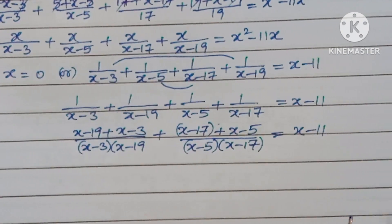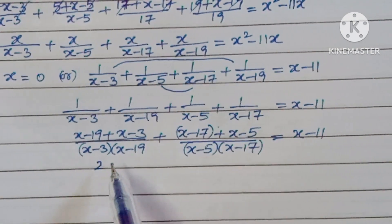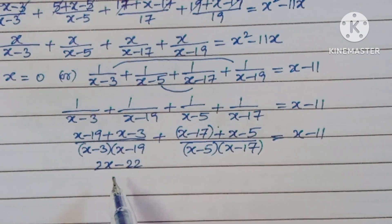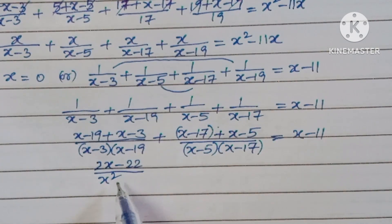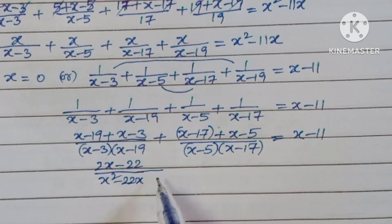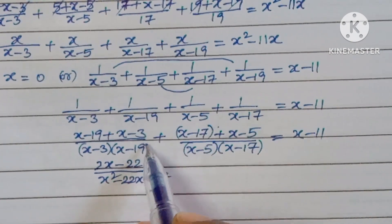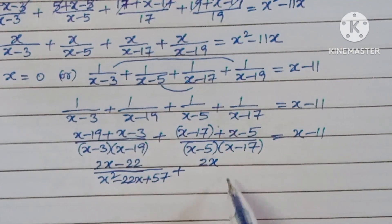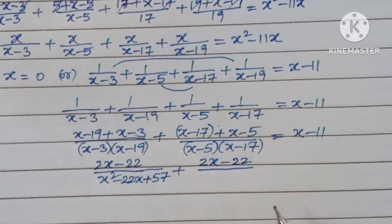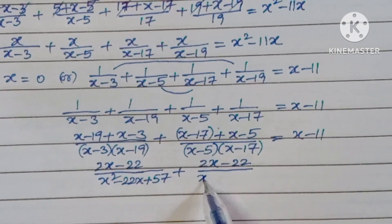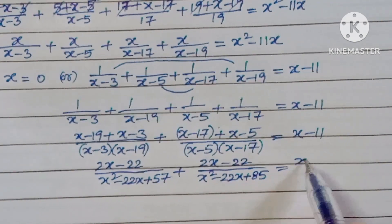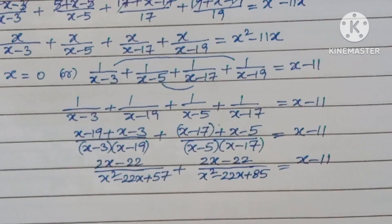In the numerator of each pair we get 2x minus 22. So we have (2x minus 22) over (x squared minus 22x plus 57) plus (2x minus 22) over (x squared minus 22x plus 85) equals x minus 11.